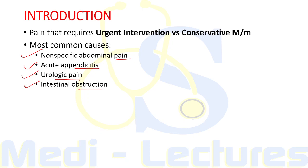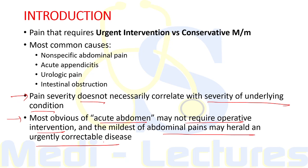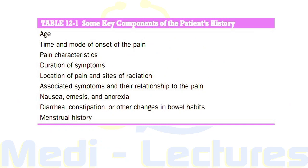A very important observation is that pain severity does not necessarily correlate with the severity of the underlying condition. The most obvious acute abdomen may not require operative intervention, and the mildest abdominal pain may herald an urgently correctable disease. In short, pain severity is not a marker of disease severity. A detailed history and physical examination are critically important for focusing the differential diagnosis.